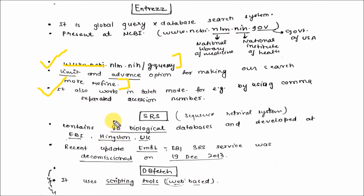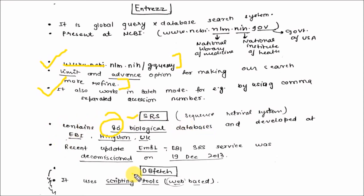The second search tool is SRS, the Sequence Retrieval System. It is present at EBI and contains 80 biological databases. The third search tool is DBfetch, which is also present at EBI and is a web-based tool.